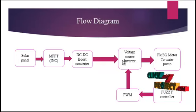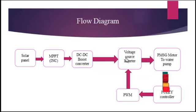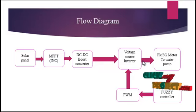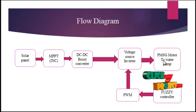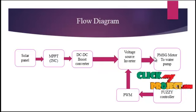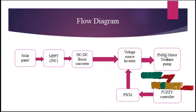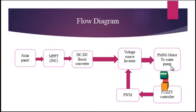Then we pass to the voltage source inverter, which fully handles the DC. The conversion process converts DC to AC, because the motor is an alternator that requires fully AC. So we are using the voltage source inverter, and then we pass into the PM-AC or PMSM motors for the water pumping system.